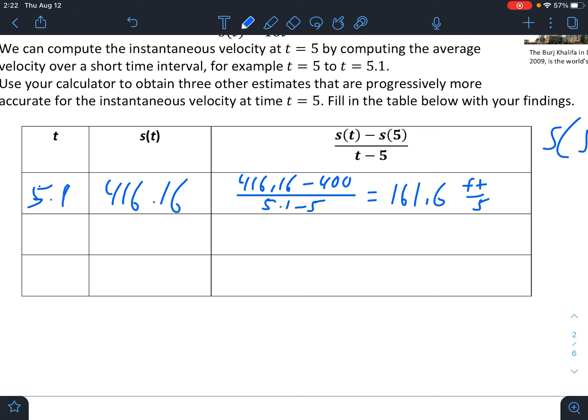Now if we want to get a better estimate, let's go to a number that's even closer to 5. So how about 5.01? Let's find S(5.01). So that would be 16 times 5.01 squared, which is 401.6016. Now we're going to find the average velocity again between those two. So 401.6016 minus 400, divided by 5.01 minus 5, gives us an average velocity of 160.16 feet per second.